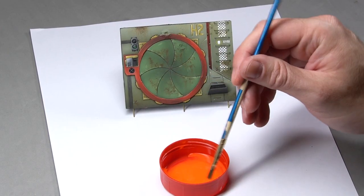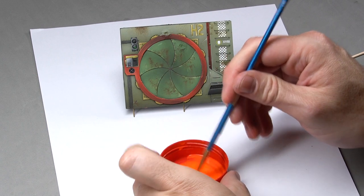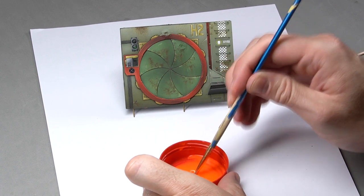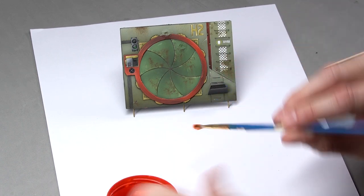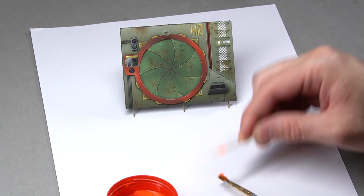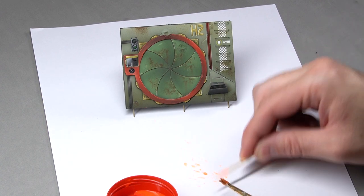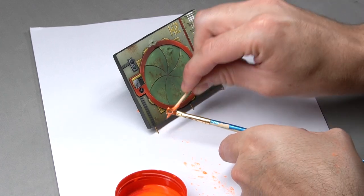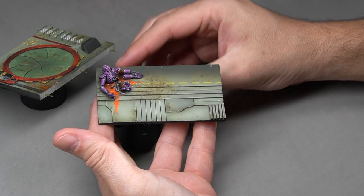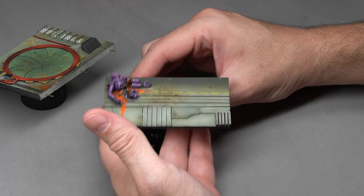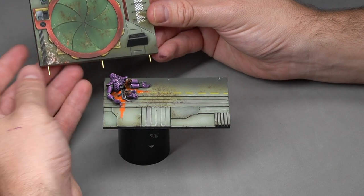On the wall, we're going to use the product differently. We're going to use an old brush and create splatters. Now we have dried blood on the floor and the splatters on the wall.